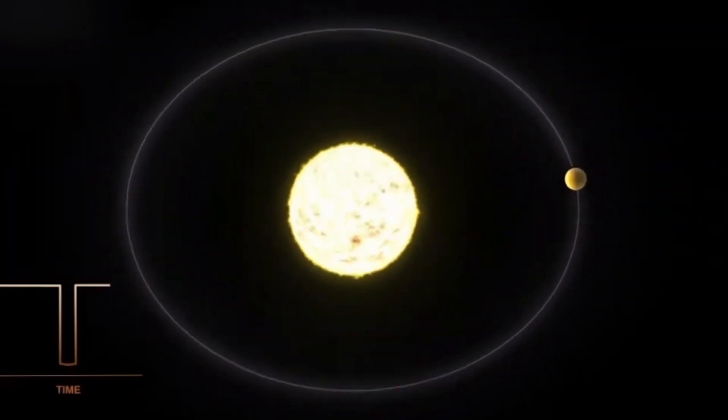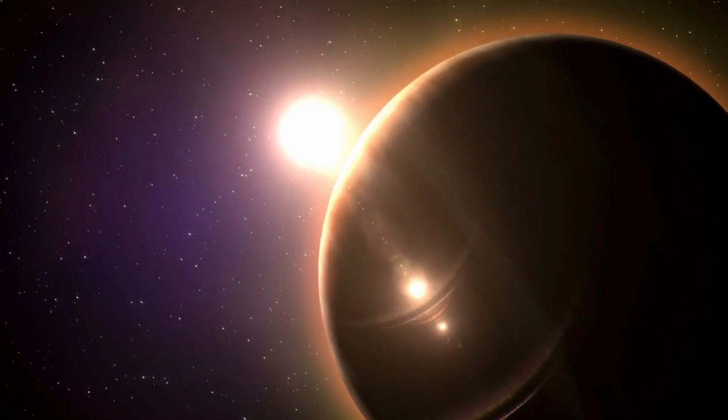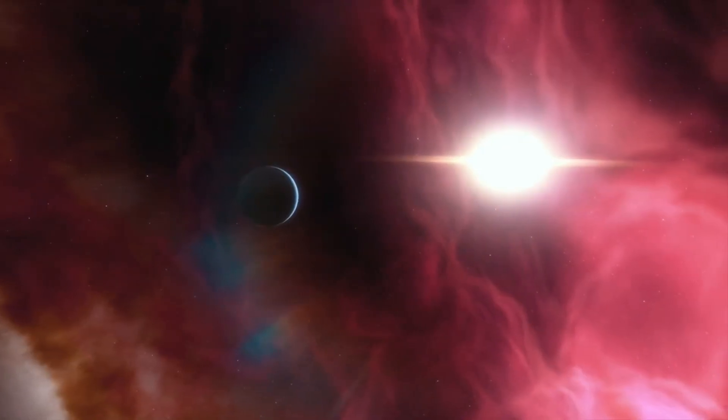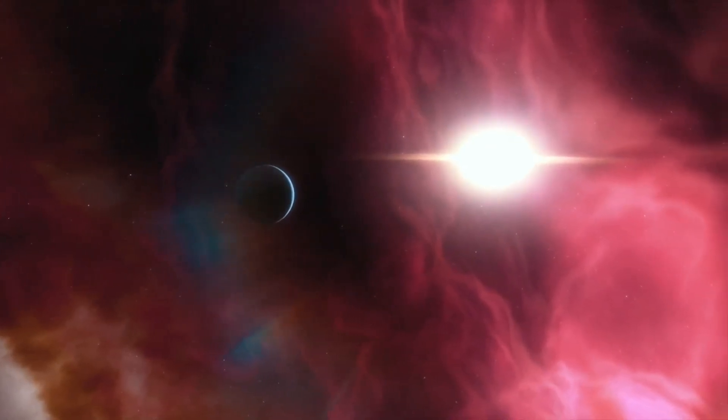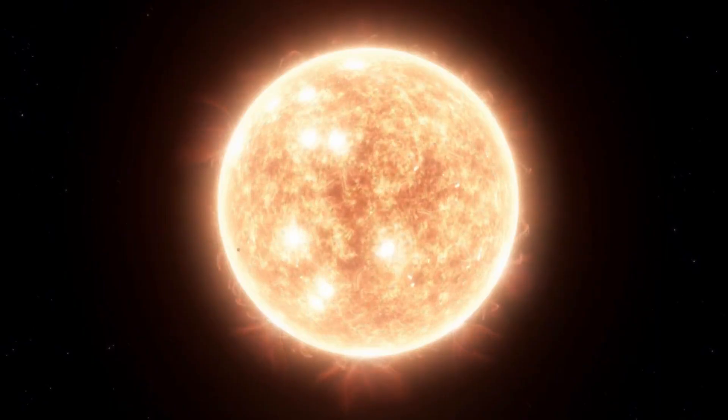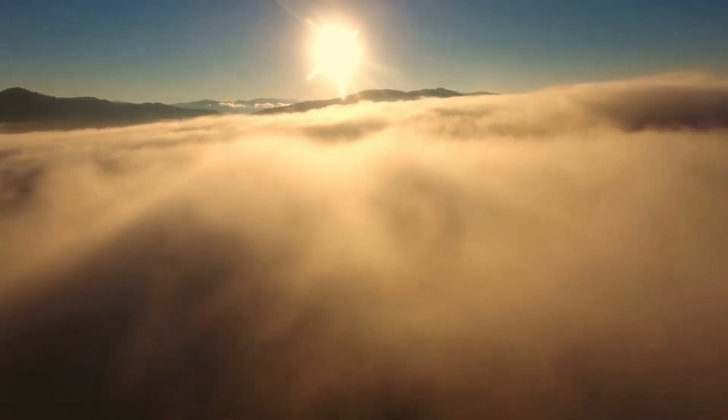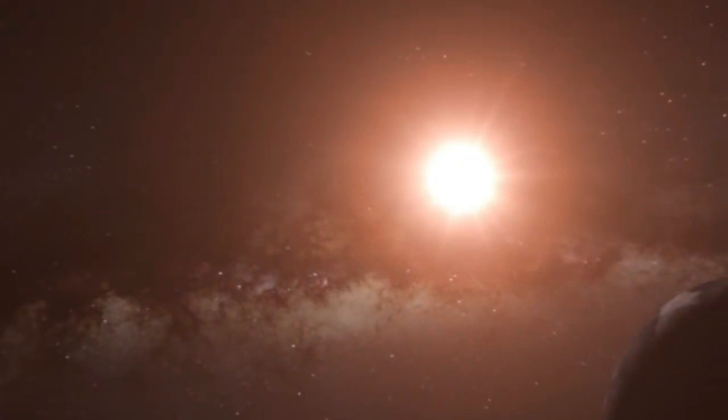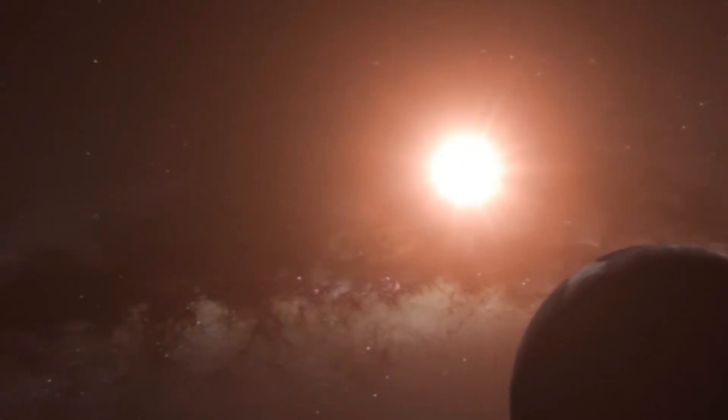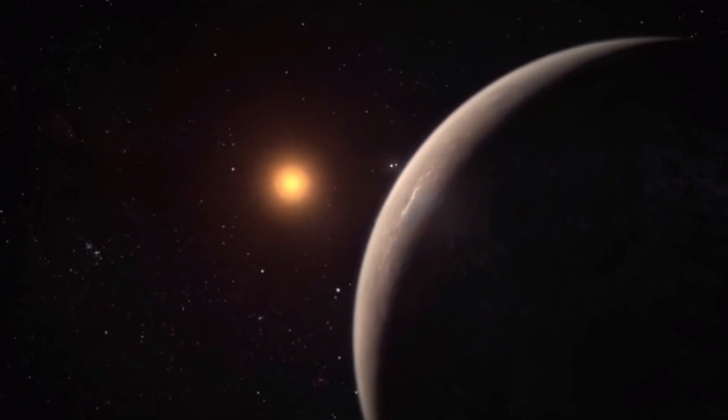So, Proxima d orbits closer to its star than the inner edge of the habitable zone around the star. The habitable zone is the region where liquid water could exist on a rocky planet. Since Proxima Centauri is a red dwarf star emitting less heat than our sun, the planet might not be as boiling hot as Mercury. However, its estimated equilibrium temperature, if it has no atmosphere, is still about 200 degrees Fahrenheit. And we don't know yet if Proxima d has an atmosphere or not.